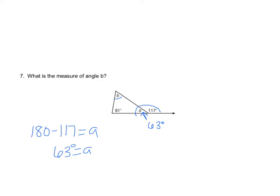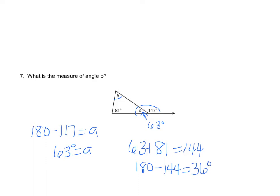Now we remember that interior angles of a triangle add up to 180 degrees. So we take 63 plus 81, which is 144, and subtract that from 180, giving us 36 degrees for angle B. That's one way to approach it: find A, then use that to find B.